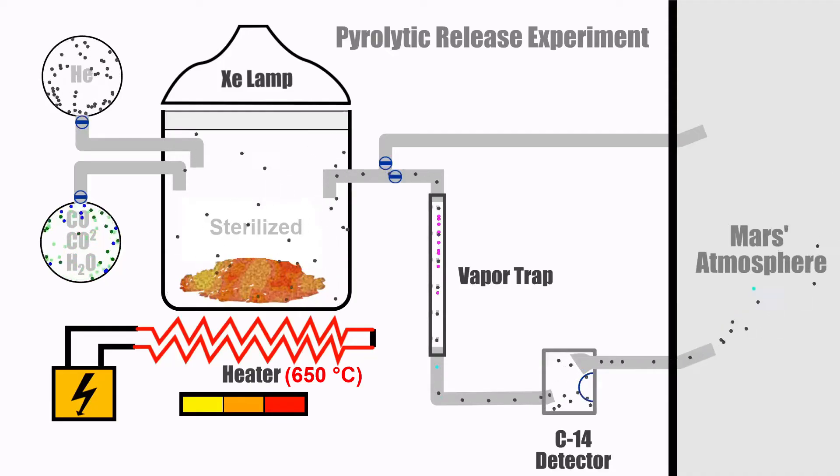If no carbon-14 was detected, then it's good indication that the initial result from the first experiment was caused by organisms in the soil. However, if carbon-14 is also detected in the sterile sample, that would indicate that some other chemical process is taking the carbon out of the air.